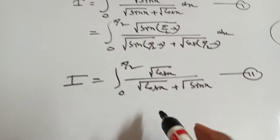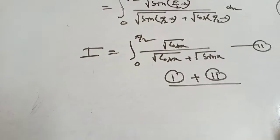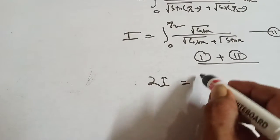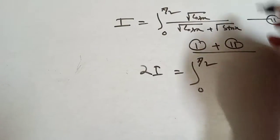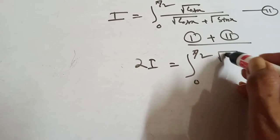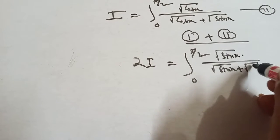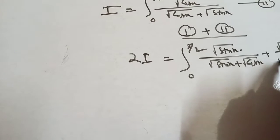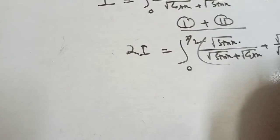Now, adding equation 1 plus equation 2: i plus i equals 2i. The integration from 0 to π/2 of: √sinx divided by (√sinx plus √cosx), plus √cosx divided by (√sinx plus √cosx), all dx.